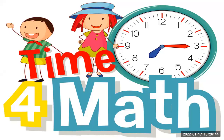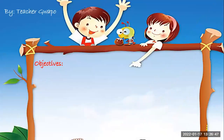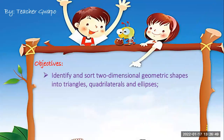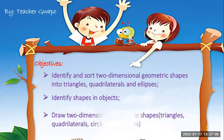It's time for math. Our objectives for this lesson are: first, to identify and sort two-dimensional geometric shapes into triangles, quadrilaterals, and ellipses; second, to identify shapes in objects; and third, you must be able to draw two-dimensional geometric shapes — triangles, quadrilaterals, circles, and ellipses.